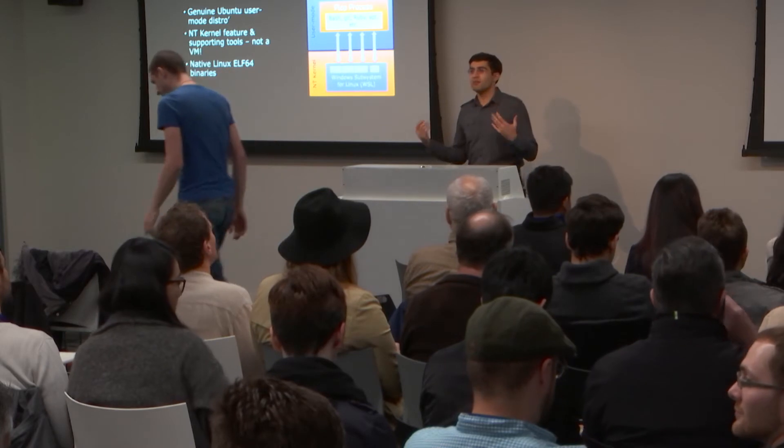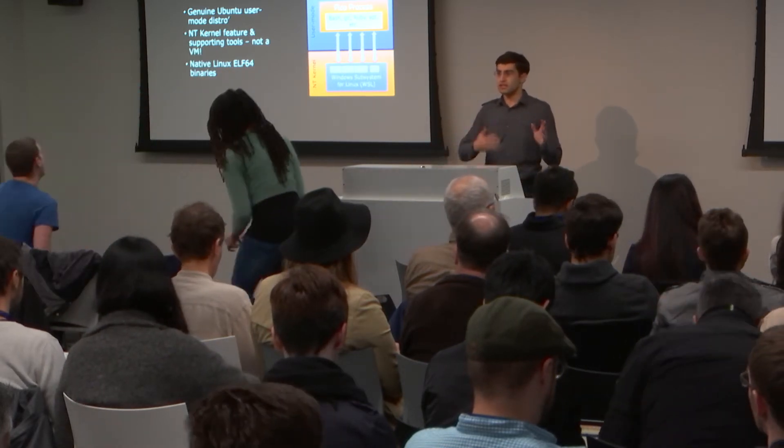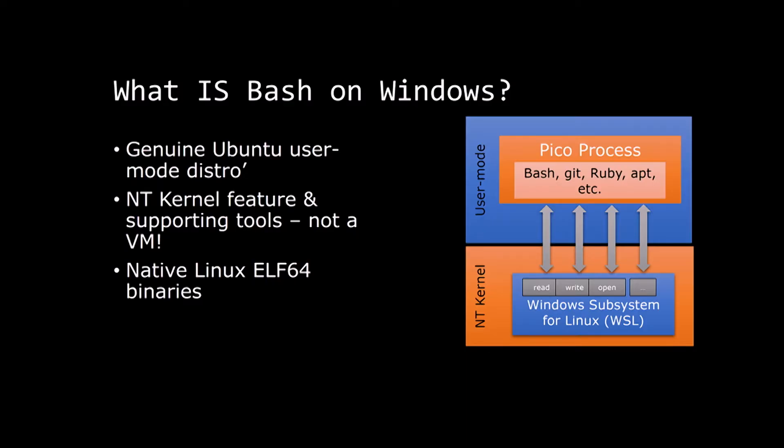Bash on Windows is what it sounds like — this is literally Linux running on Windows. There's no emulation, no VM, no fancy recompilation going on behind the scenes. You do sudo apt-get install whatever repository you want, and then you execute it natively against the NT kernel.